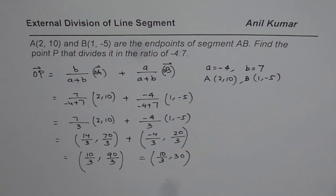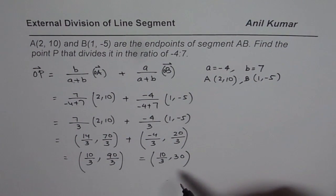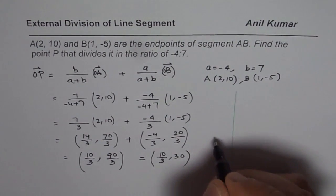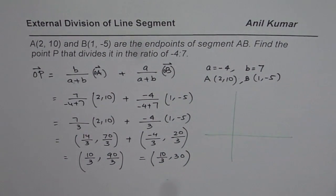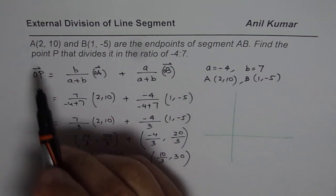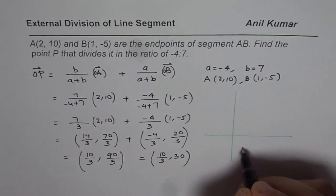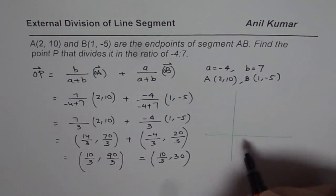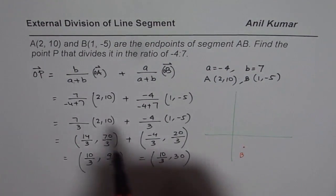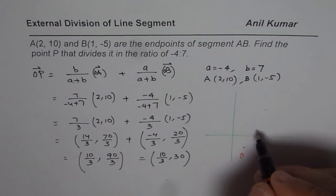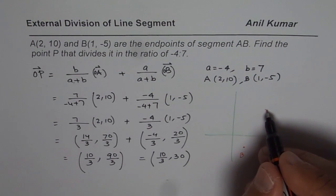Now let us also try to understand what the situation is. In this particular case what we really have is 2 points A and B. So let me sketch it. We have point A is 2,10 and point B is 1,-5. So let's say this is 1, this is -5 kind of here. And this is point B for us.